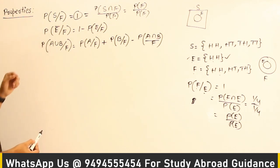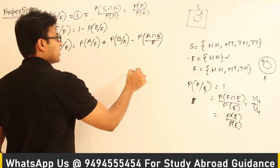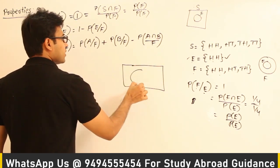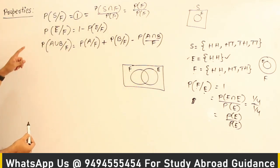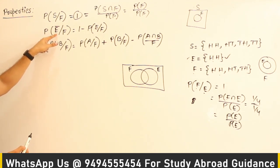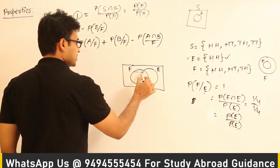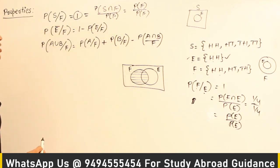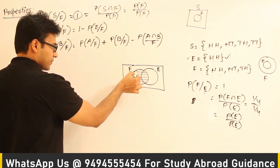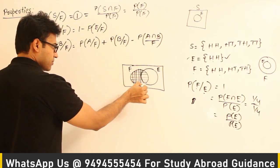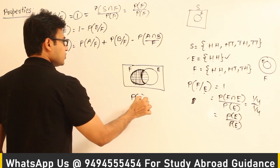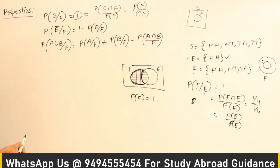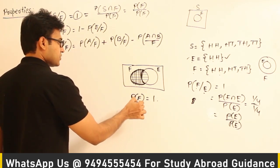The next property is P of E complement given F is equal to 1 minus P of E given F. Let us say this is the sample space and an event F has already occurred. There is also an event E. They are asking what is the probability of E not happening given that F has happened. Given that F has happened, this is what has already happened — it is the new sample space, so P of F equals 1.